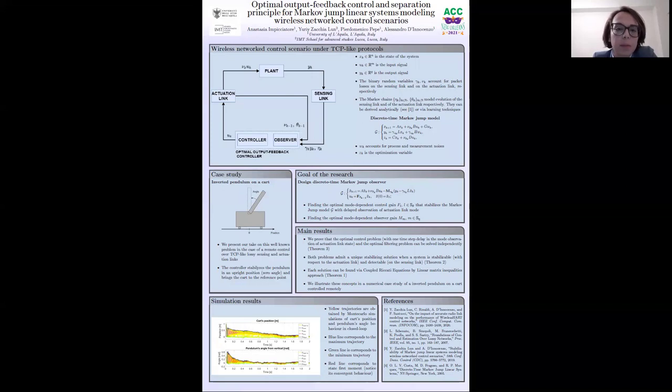Good morning, everyone. I am Anastasia Impicciatore and I will present optimal output feedback control and separation principle for Markov-jump linear systems modeling wireless network control scenarios realized with Yuridza Chalco, Pierdomenico Pepe and Alessandro D'Innocenzo. First of all, we consider wireless network control scenario under TCP-like protocols where a plant sends its measurements via sensing link to the controller which sends its control packets via actuation link to the actuators. The considered links may suffer from packet losses that we model via binary random variables. Packet losses depend on the state of the considered links and we refer to the state of the links as modes of the system that evolve according to Markov-Chain models.